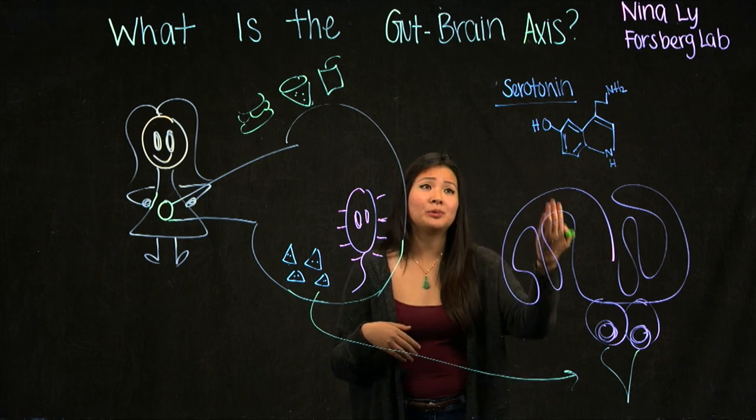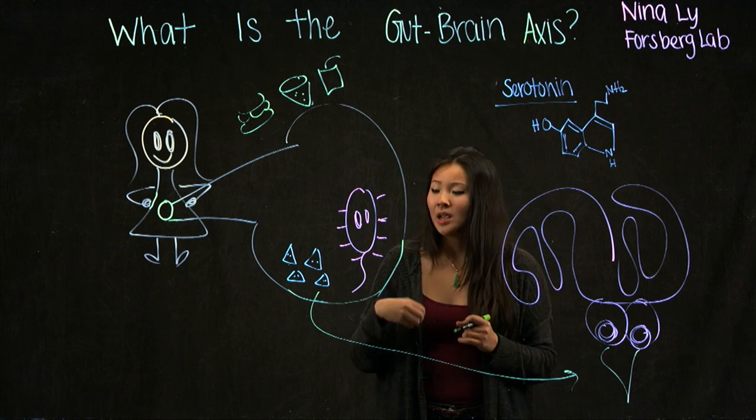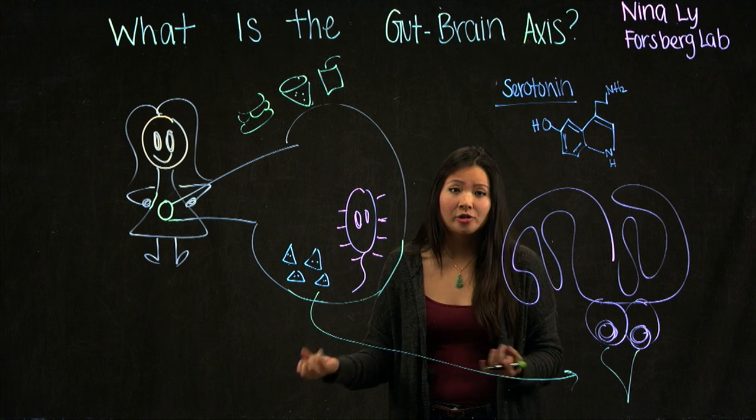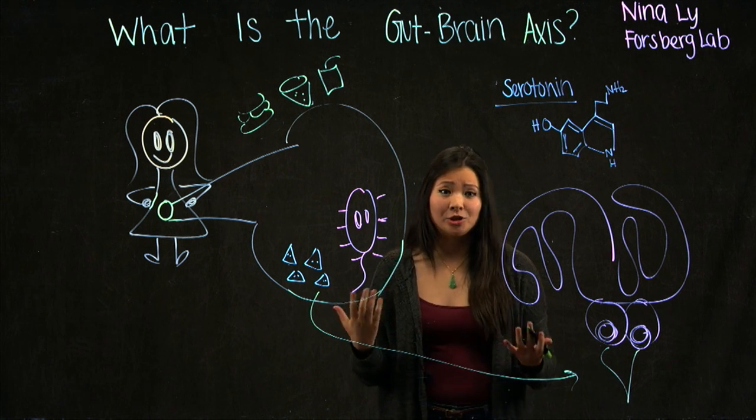Because, take for example, serotonin. Whenever we're feeling sad or upset, we usually tend to reach for chocolate or something sweet, because it can help us produce a lot of serotonin.